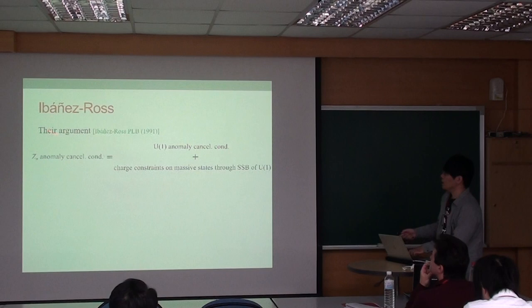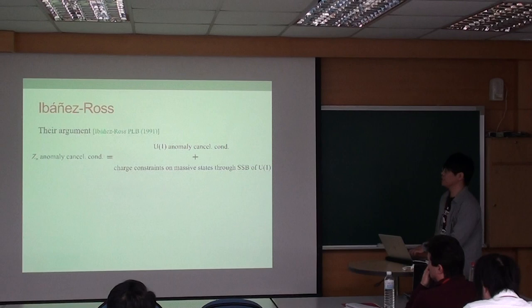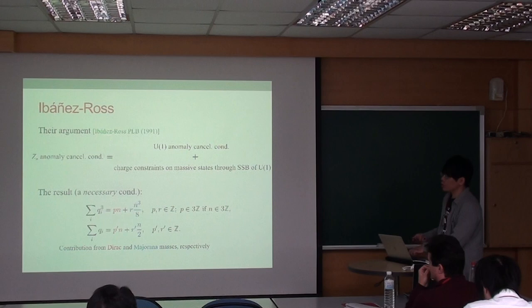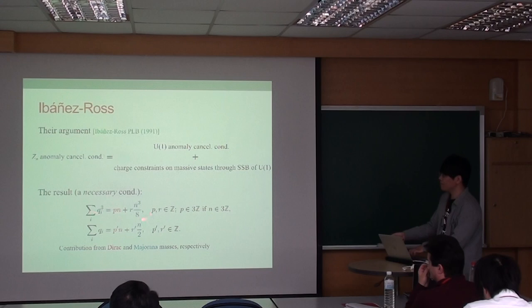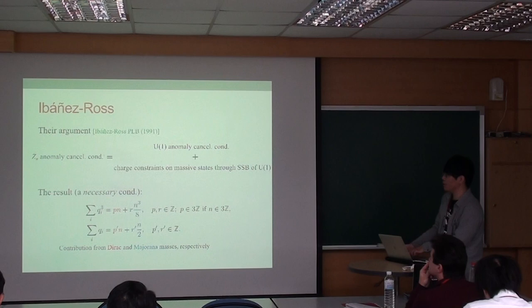Work by Ibáñez-Ross argued the ZN anomaly cancellation condition based on the U(1) anomaly cancellation condition plus the charge constraint of massive states around the Higgs symmetry breaking scale. The result they obtained, which is just a necessary condition for anomaly-free ZN symmetries, involves both cubic and linear terms of ZN charges at IR. The right-hand side of this anomaly formula comes from the contribution of Dirac and Majorana type masses.